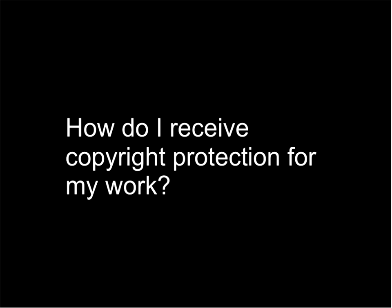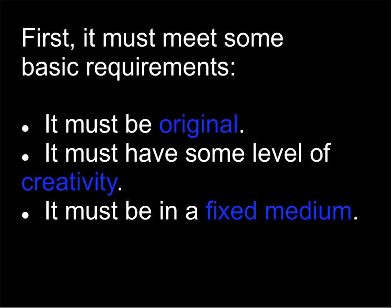How do you receive copyright protection for your work? First, it has to meet some basic requirements: it must be original, have some level of creativity, and be in a fixed medium. Original is obvious — you can't just copy something else. It must have some creativity, so something like 'two plus two equals four' is not protected — that's purely a factual statement with no authorship. And it must be in a fixed medium: written down on a napkin, on a hard drive, on a piece of paper, recorded on videotape or audio tape.